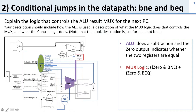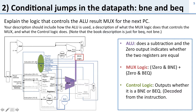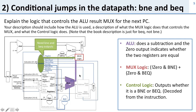The control logic needs to tell the mux logic whether it's a branch equal or branch not equal. We just need to tell it which type of branch it is; combined with the zero signal, that allows us to choose the correct next instruction. For the control, we need outputs for both branch not equal and branch equal, because we do different things depending on zero and whether it's equal or not equal.